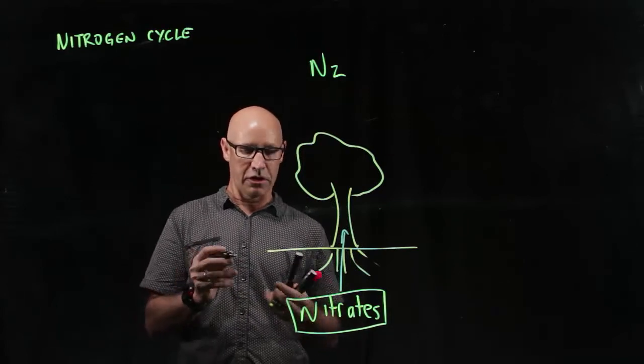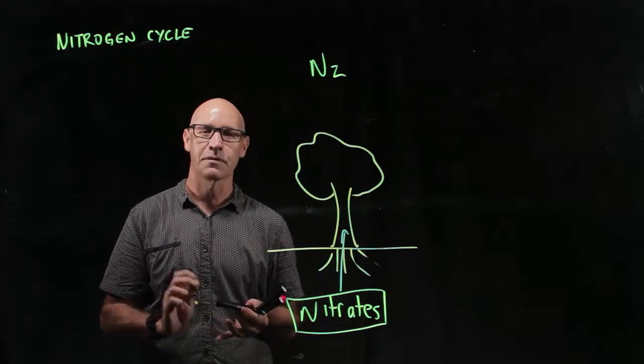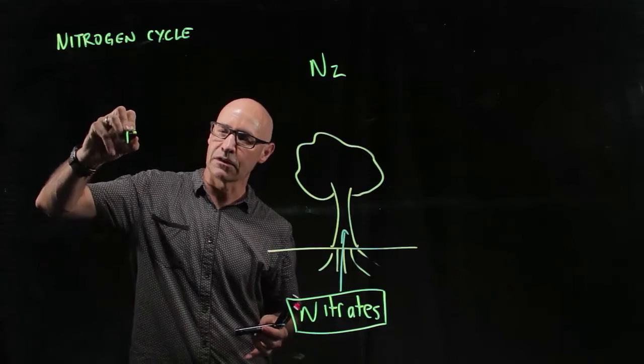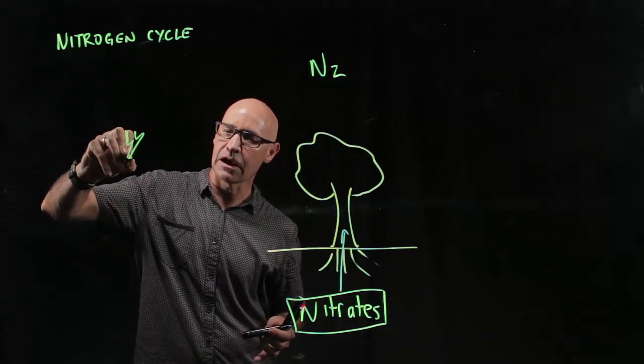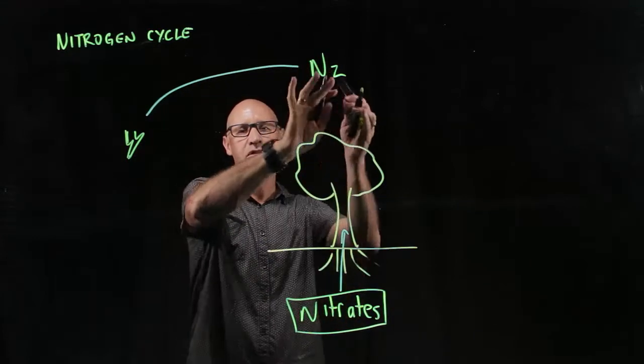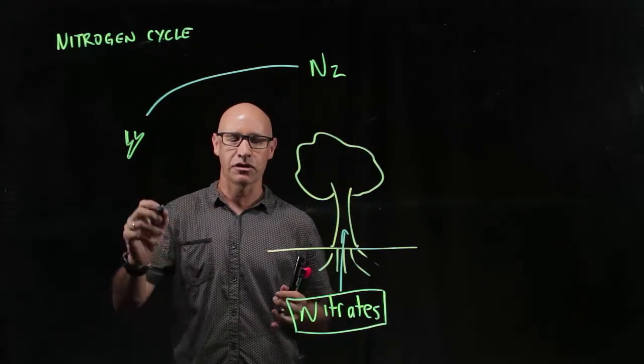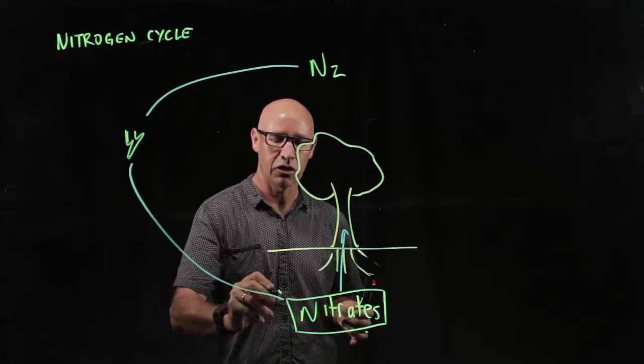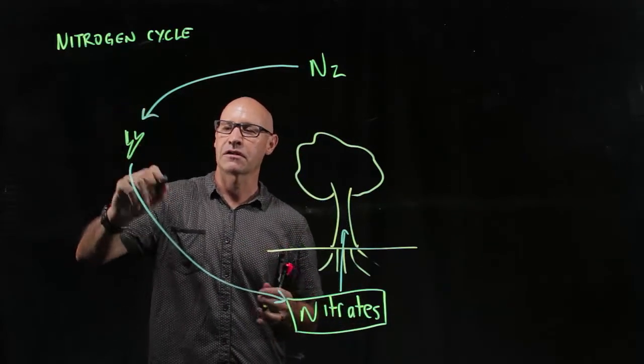So how does that occur? Well there's three processes, two of them are natural. The first one is lightning. So in a lightning storm and a lightning strike, it actually takes nitrogen, gaseous nitrogen, and forms nitrates. So that's lightning.